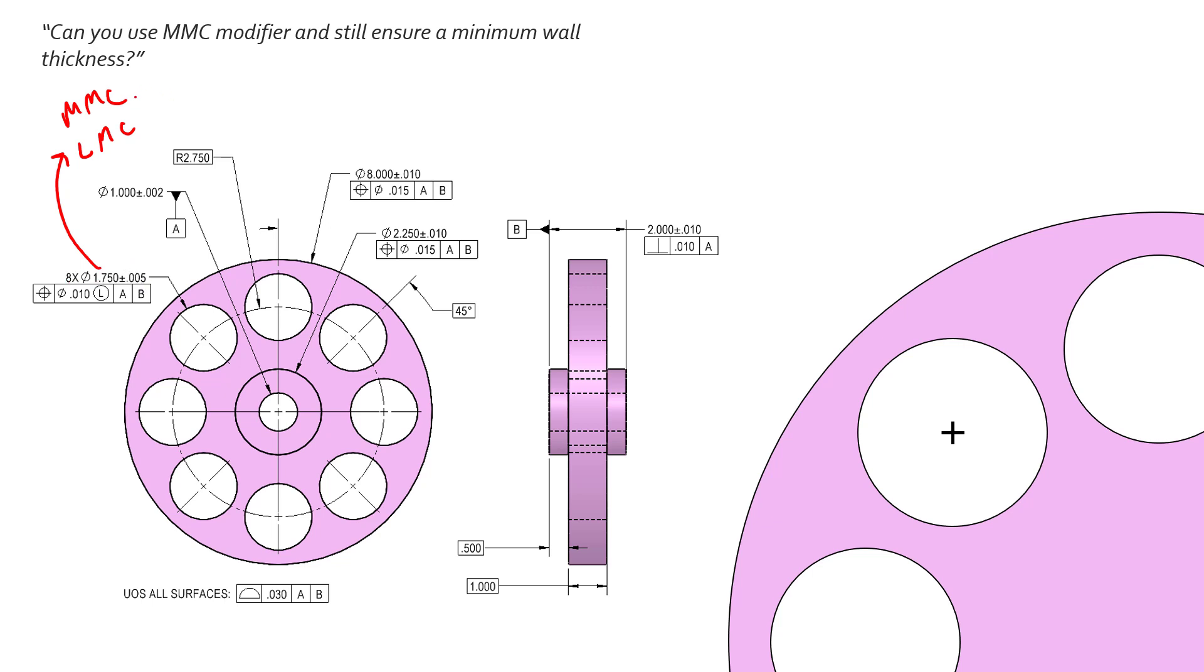Every size dimension has two limits: the MMC limit and the LMC limit. So for an internal feature, our MMC limit is when the most amount of material exists, and that is 1.745 or the smallest diameter. We're adding material, the diameter shrinks. And for the LMC size, we have 1.755, or where the least amount of material exists. So we know the size dimension has two limits: MMC and LMC.